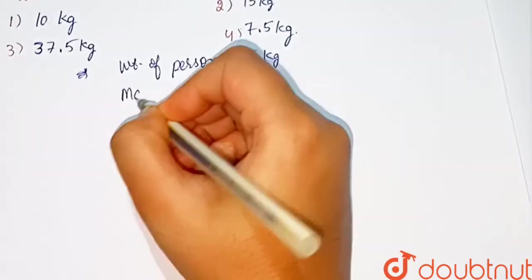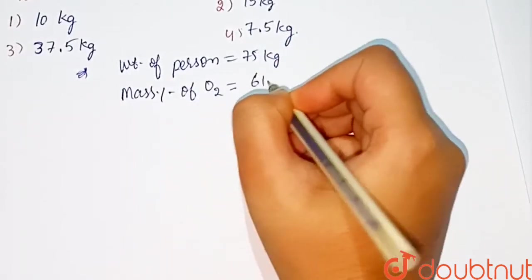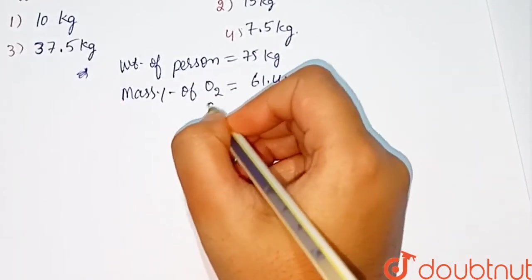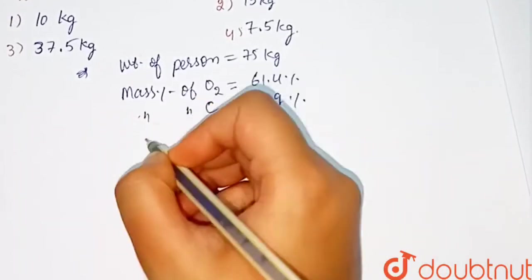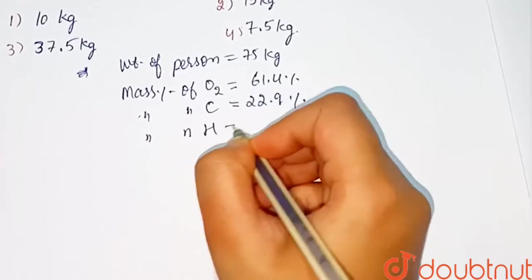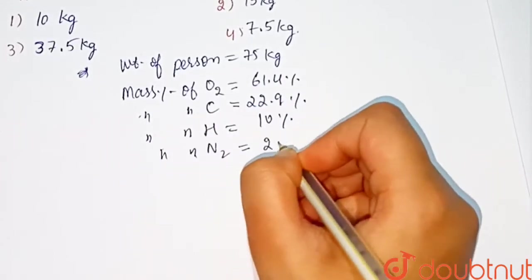Mass percentage of hydrogen equals 10%, mass percentage of nitrogen equals 2.6%.